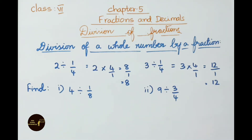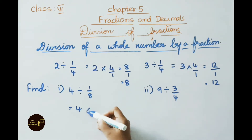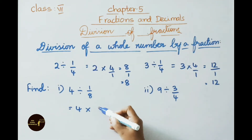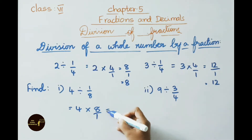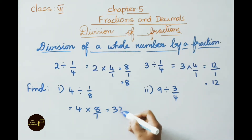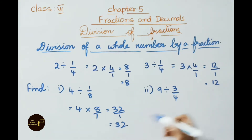See now, find 4 divided by 1/8. That equals to 4 × 8/1, reciprocal of 1/8. So 4 × 8 = 32/1, that equals to 32.